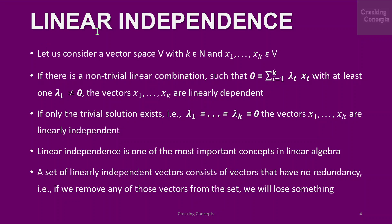Now we'll see what linear independence is. Consider a vector space V with k (a natural number) and x1, ..., xk elements of the vector space. If there is a non-trivial linear combination such that 0 = sigma(i=1 to k) lambda_i * x_i with at least one lambda_i not equal to 0, then the vectors x1, ..., xk are linearly dependent. If only the trivial solution exists, that is lambda_1 = ... = lambda_k = 0, the vectors x1, ..., xk are linearly independent.